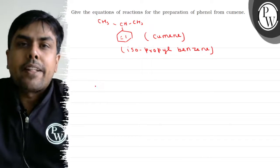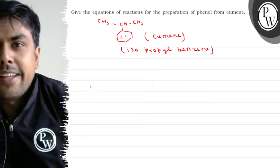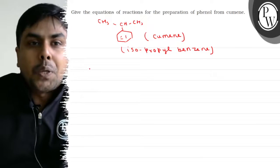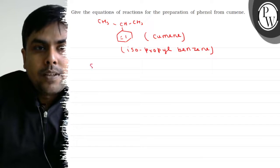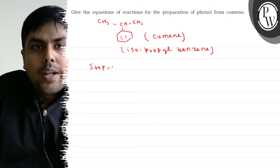Now let's talk about the synthesis of phenol. Basically, this reaction occurs in two steps. Step 1 is as follows.